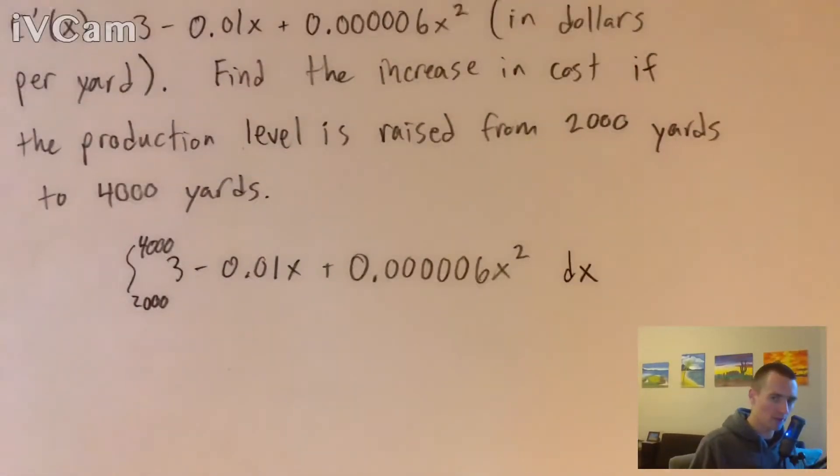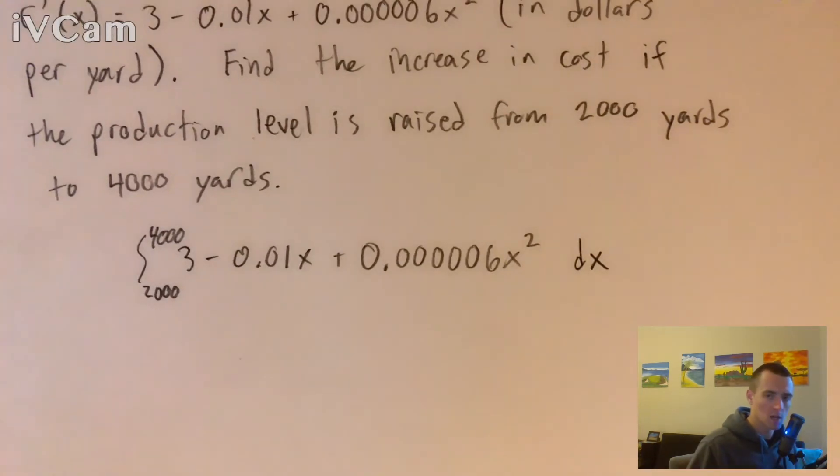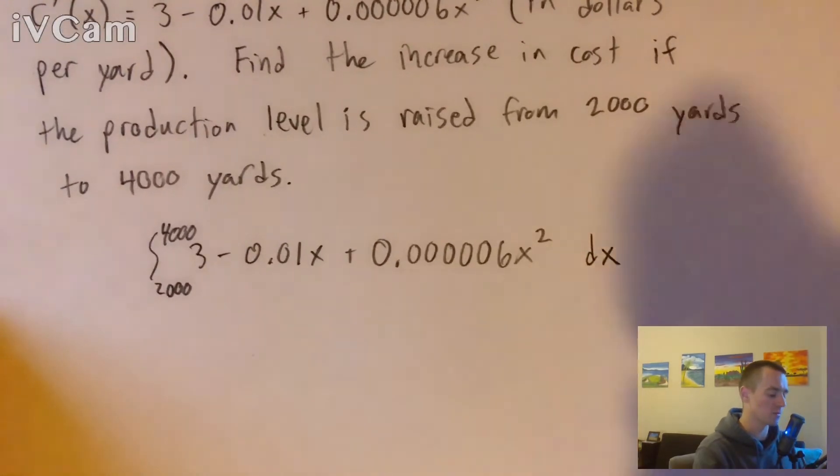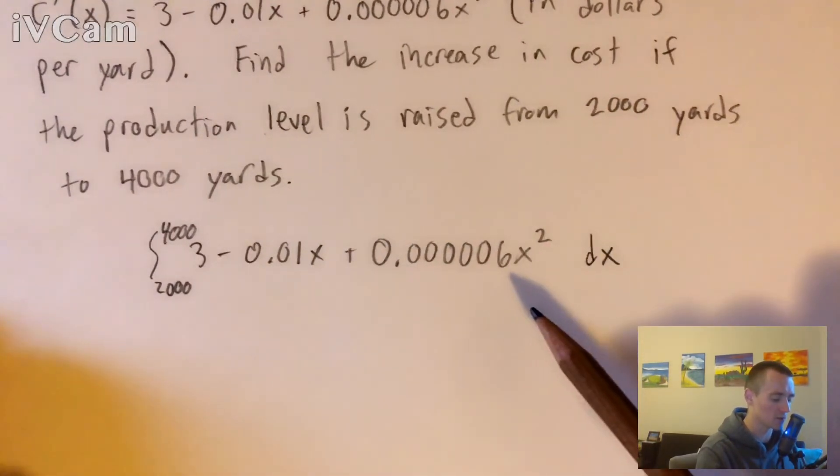So if we evaluate this integral now, that should tell us the total cost difference between these two levels of production gathered from our marginal cost formula or function. To integrate this, we could use the definite integral properties from my study guide that I mentioned. But really, to integrate this, all we have to use is the power rule.